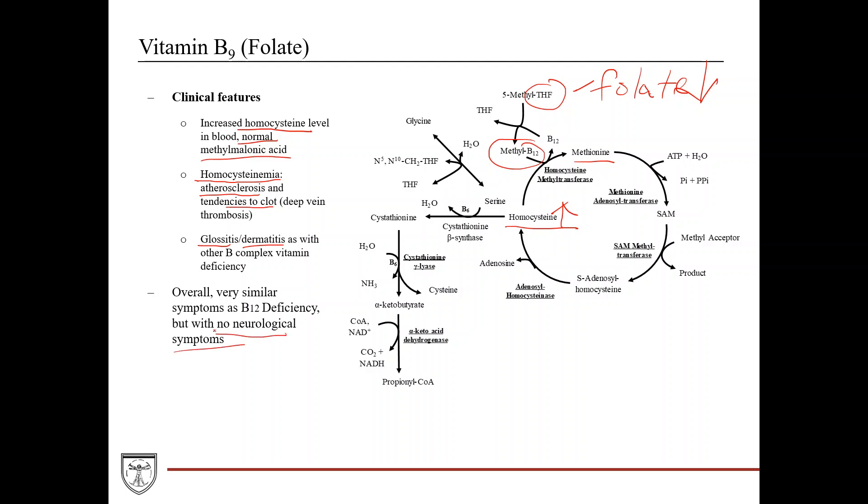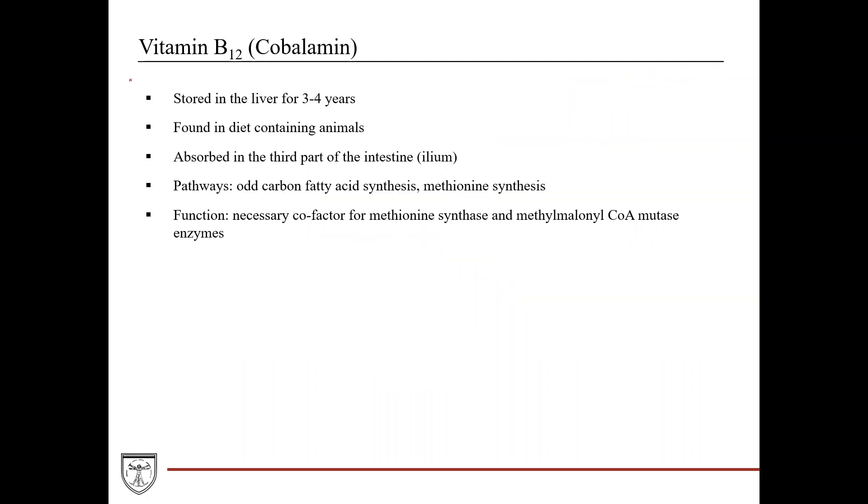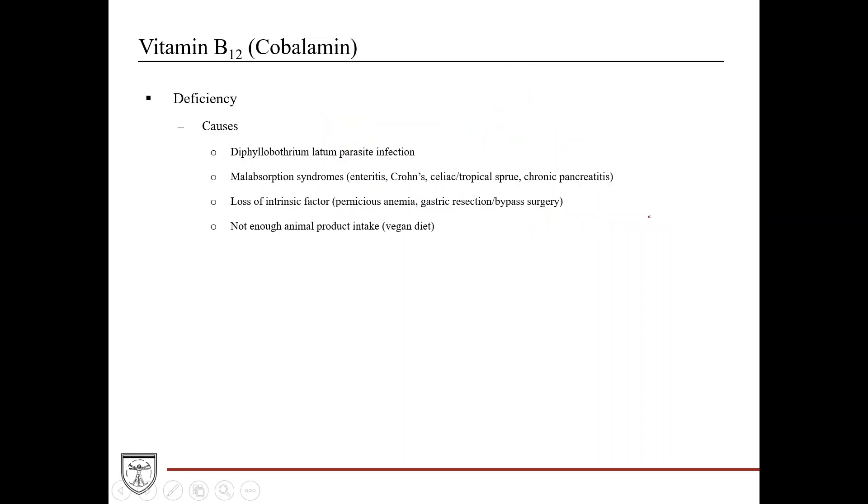Vitamin B12, cobalamin, is stored in the liver for three to four years. It's found in a diet containing animals, so meat. It's absorbed in the third part of the intestine known as the ileum. Pathways it's involved with are odd-carbon fatty acid synthesis and methionine synthesis. Within those pathways, it's a necessary cofactor for methionine synthase and methylmalonyl-CoA mutase.